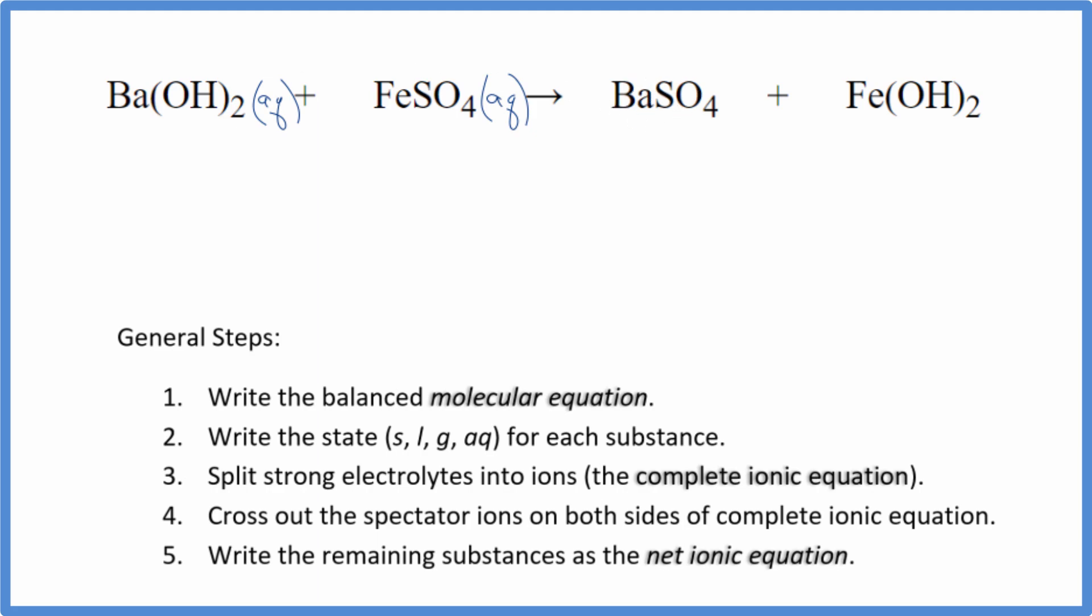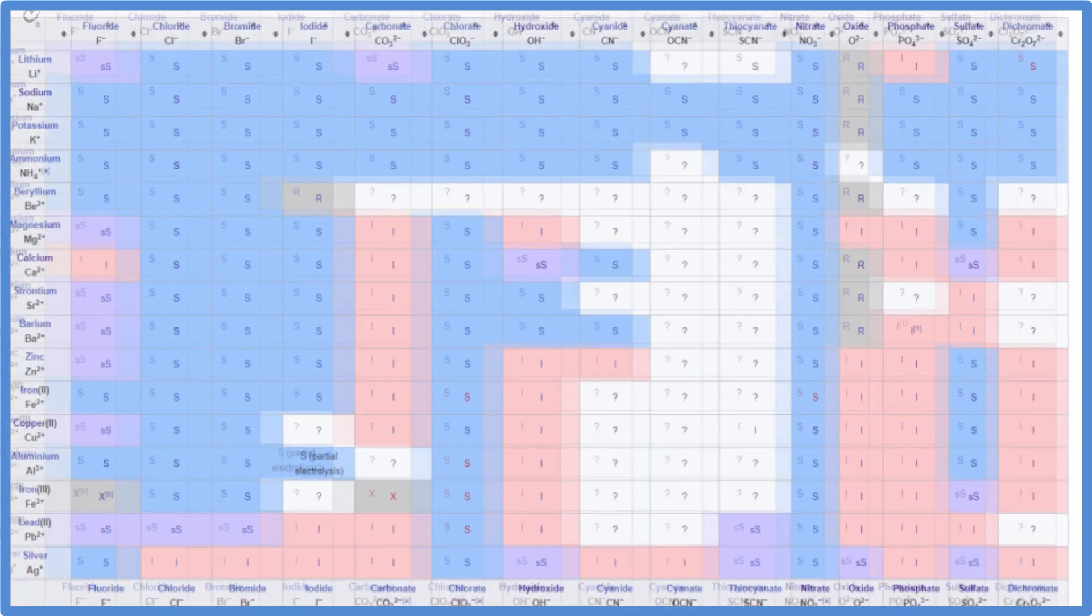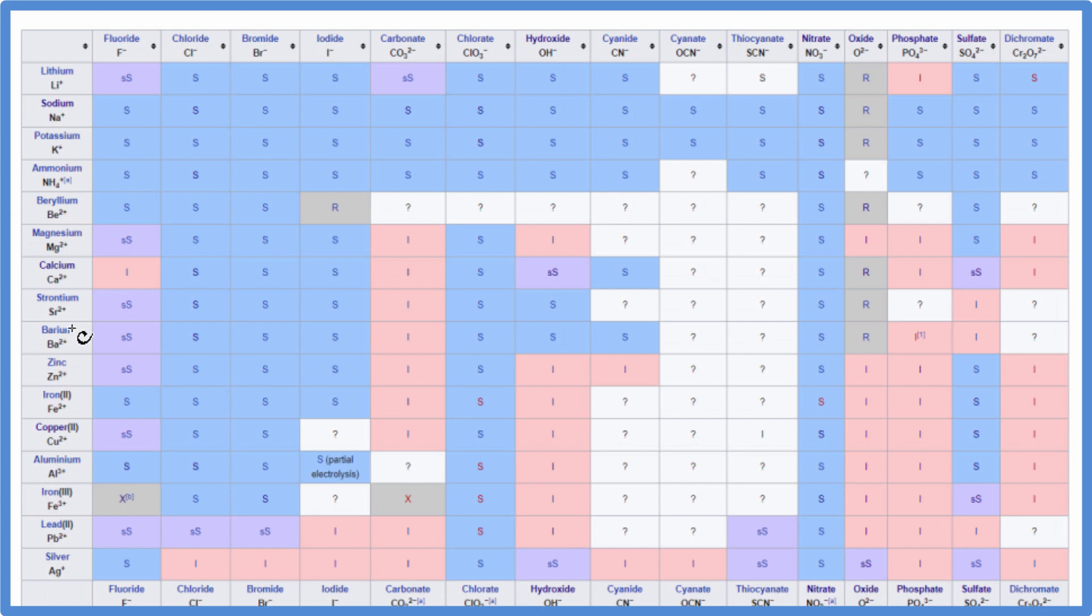Let's take a look at a solubility table here. So we go down the positive ions and we find barium right here, and our sulfate is right here. You can see S for most of the sulfates, that means they're soluble. But as we go over here, we see this I for barium sulfate. So barium sulfate and then strontium sulfate, lead sulfate, they're insoluble.